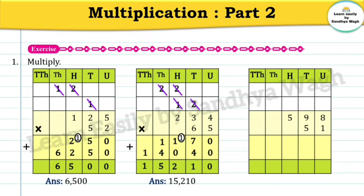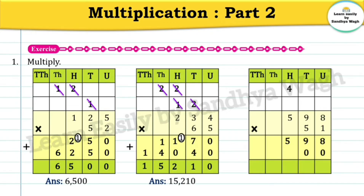Now let's multiply 598 by 51. One eights are eight, one nines are nine, one fives are five. Now let's write zero and five eights are forty, so we will write 0 in the tens place and 4 will go as a carry over. Five nines are forty-five, forty-five plus four is forty-nine, so we write 9 in the hundreds place and 4 will go as a carry over. Five fives are twenty-five, twenty-five plus four is twenty-nine.